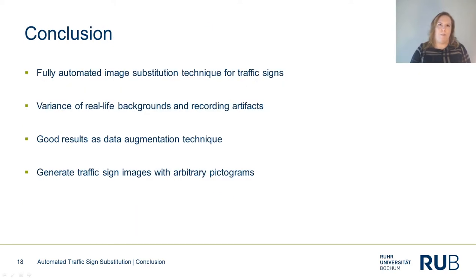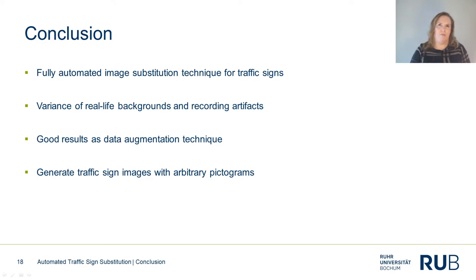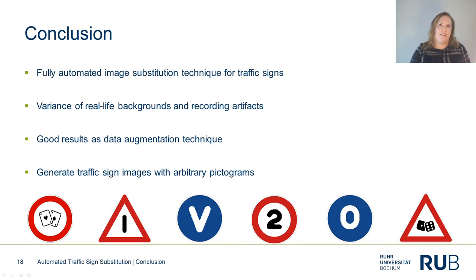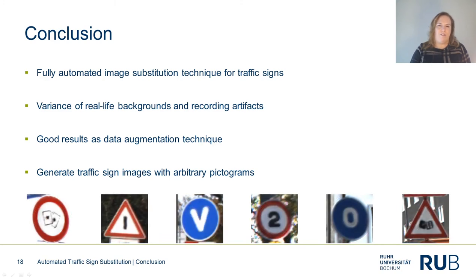Let me conclude this talk with a quick summary. We've presented a fully automated image substitution technique for traffic signs. Our method generates images that can represent a number of recognition problems found in natural image data, such as illumination changes and camera artifacts like motion blur or depth of field. We see our approach primarily as a data augmentation technique and have shown that enhancement of a real-world dataset with our synthetic images can increase classification results compared to the purely real-world dataset version. We can not only generate learned traffic sign classes, but also traffic sign images with arbitrary pictograms of learned categories — this includes fake signs, and I took the liberty of creating custom traffic signs borrowing parts of the CSI-V logo and location-related symbols to generate realistic fake traffic signs.